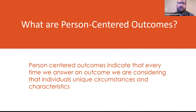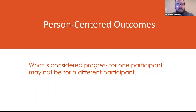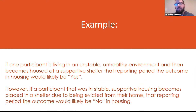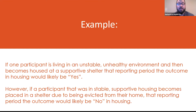Each individual is unique, and the housing situation for one may differ from another. Even though they are both living in a house or in a recovery center, we have to look at the situation individually and consider what may be affecting or what would be best for that participant. What is considered progress for one participant may not be for a different participant. An example: if one participant is living in an unstable, unhealthy environment and then becomes housed at a supportive shelter during that reporting period, the outcome in housing would likely be a yes. However, if a participant in stable supportive housing becomes placed in a shelter due to being evicted, the outcome would likely be a no.